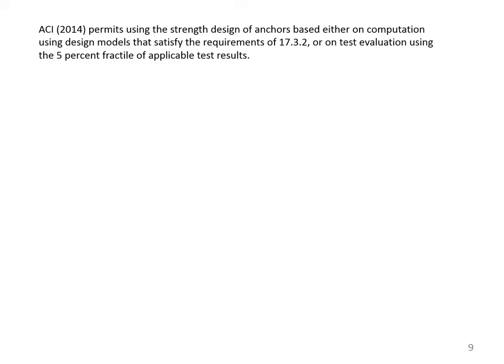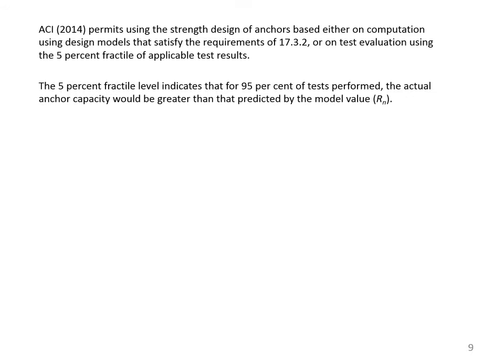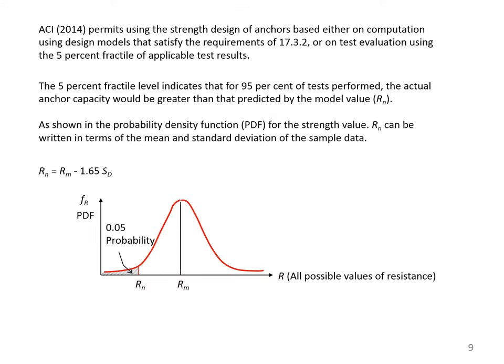ACI 2014 permits using the strength design of anchors based either on computation using design models that satisfy the requirements of Section 17.3.2, or on test evaluation using the 5% fractal of applicable test results. The 5% fractal level indicates that for 95% of tests performed, the actual anchor capacity would be greater than that predicted by the model value Rn, also called the nominal resistance value. In a probability density function for resistance R, the mean value is Rm and the nominal value Rn corresponds to 0.05 probability, so Rn equals Rm minus 1.65 times the standard deviation St.